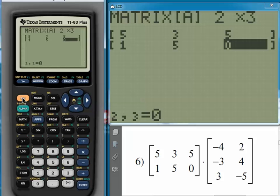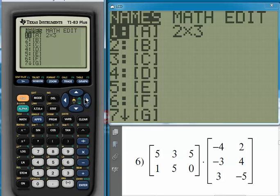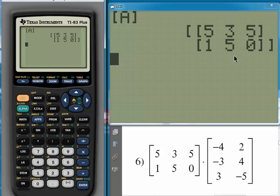Let's go to the main screen by pressing the second key, and then Mode. All right, now the second key, and hitting this key for the matrix. Under the names, we can just select the name of the matrix. It'll insert it onto the home screen, and by pressing Enter, we can view it. This is a good way to make sure that you entered the right entries into the matrix. Looks like all those elements are correct.